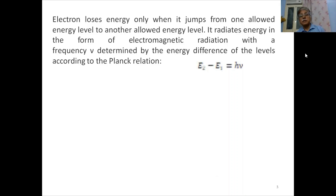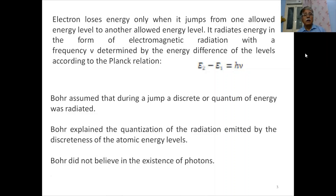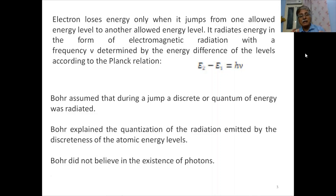The frequency ν is determined by the energy difference of the levels according to Planck's relation: E₂ minus E₁ equals hν, where E₂ is the energy of the orbit from which the electron jumps and E₁ is the energy of the orbit to which it jumps. Bohr assumed that during a jump, a discrete quantum of energy hν was radiated. Bohr explained the quantization of radiation because of the discreteness of atomic energy levels — no quantum theory was involved, only discrete orbits. Mind it: Bohr did not believe in the existence of photons.